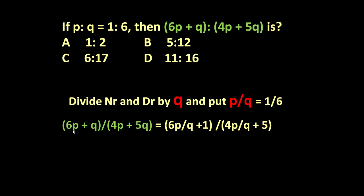It is given (6p + q)/(4p + 5q). Now let us divide all these terms simply by q, so it will become (6p/q + q/q)/(4p/q + 5), where q/q = 1, divided by 4p/q.